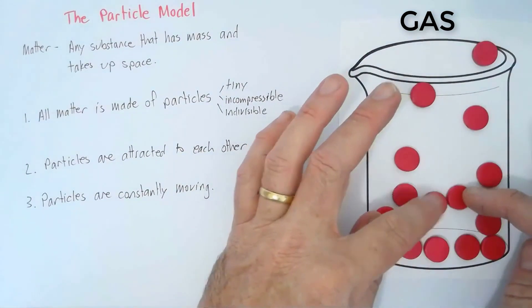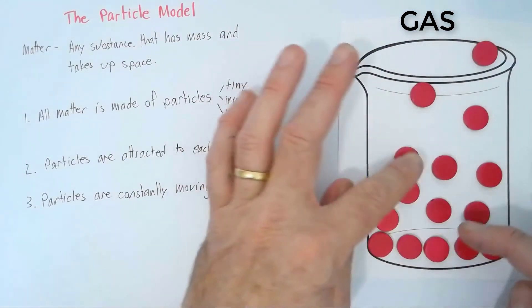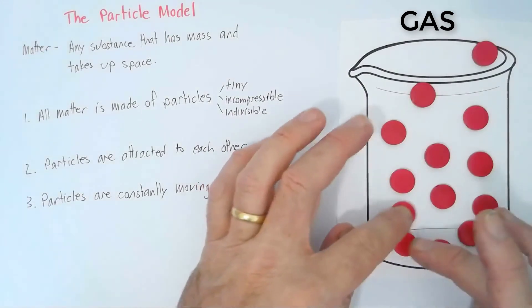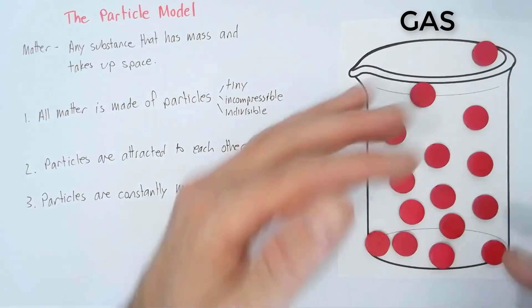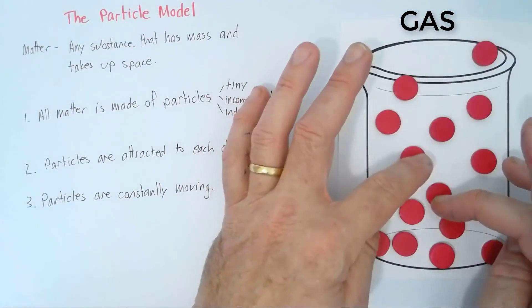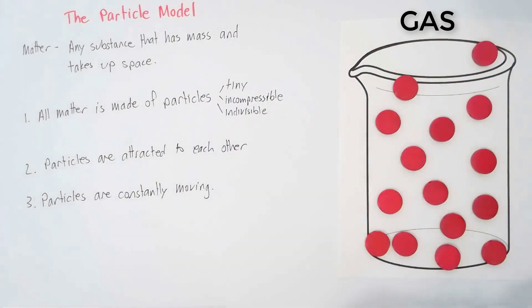The thing with a gas is there's a much bigger distance between each of the particles so that you're able to actually compress a gas and squeeze it back together again and take the space out between them. So that's what a gas is. There's a big gap between them. The particles aren't actually in contact with each other.